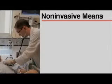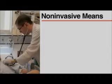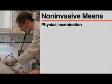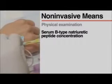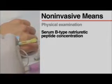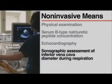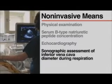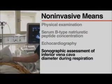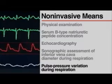Instead, cardiac function and volume status should be assessed using non-invasive means, such as physical examination, measurement of serum B-type natriuretic peptide concentration, echocardiography, sonographic assessment of inferior vena cava diameter during respiration, and measurement of pulse pressure variation during respiration.